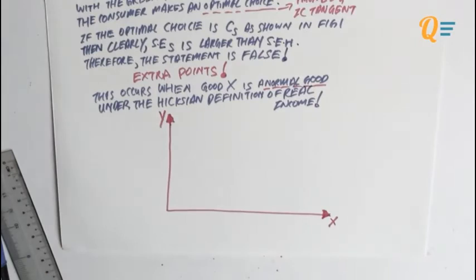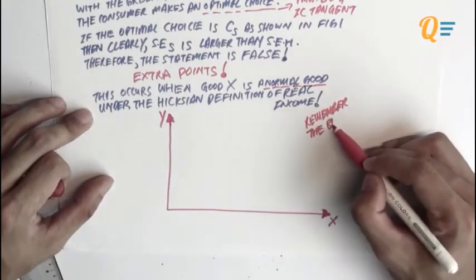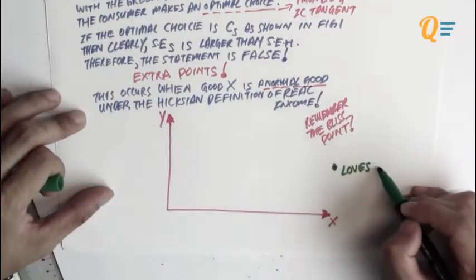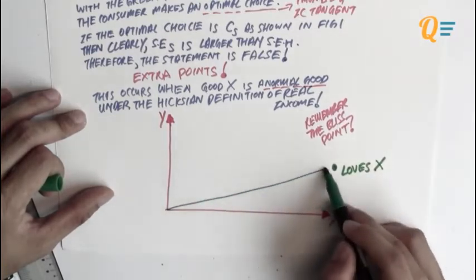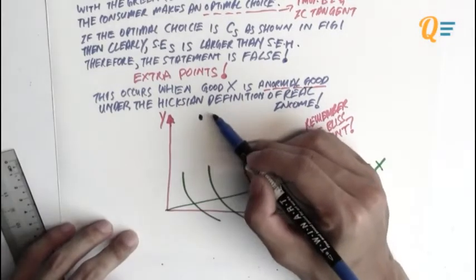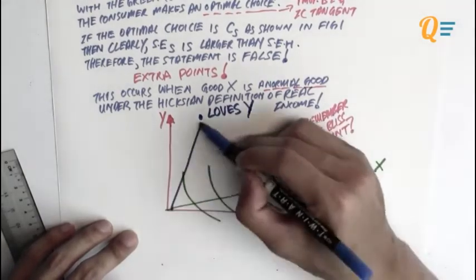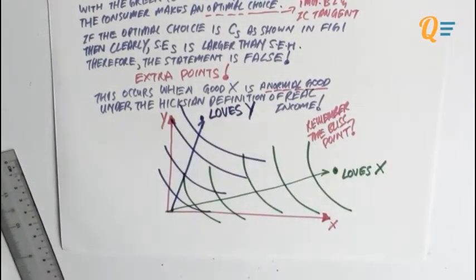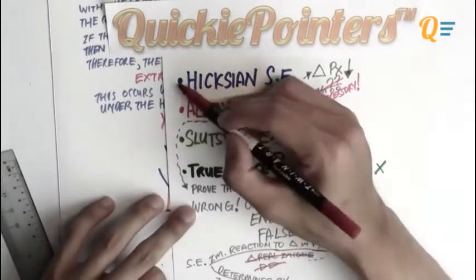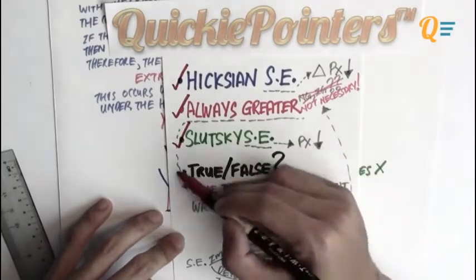Where you position the indifference curve can sometimes be pretty subjective, but there is an explanation behind it. Imagine a consumer who has only got either good X or good Y. Do you remember the bliss point? The bliss point is where the individual wants to go forever. If he loves X, he's going to move this way, and all the indifference curves are going to be moving in that direction. If the individual loves Y, his bliss point is going to be somewhere else and he'll move upwards. That is why the indifference curves can sometimes seem to be shifting here and there. We've tackled all the quickie pointers and can go on to the next question.